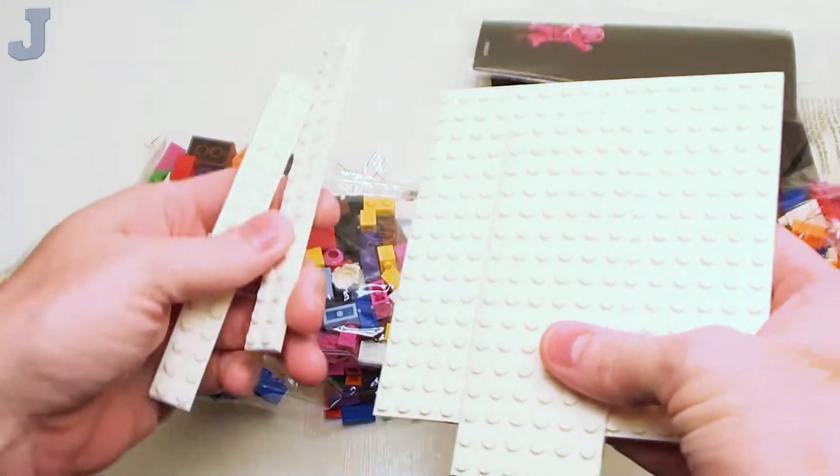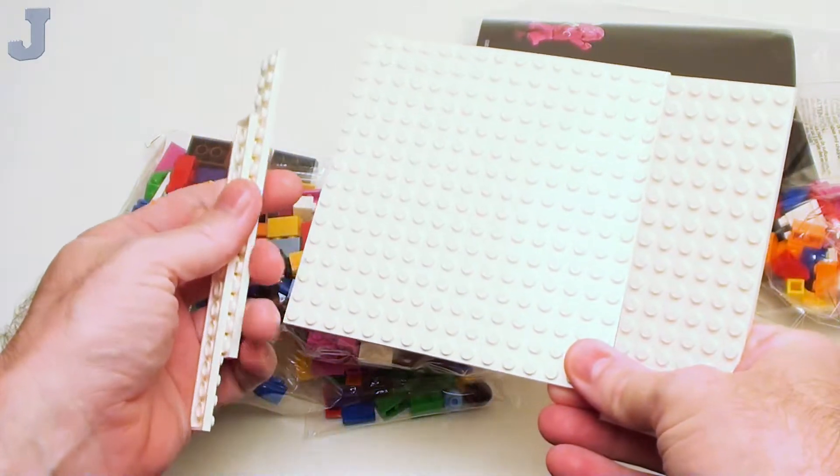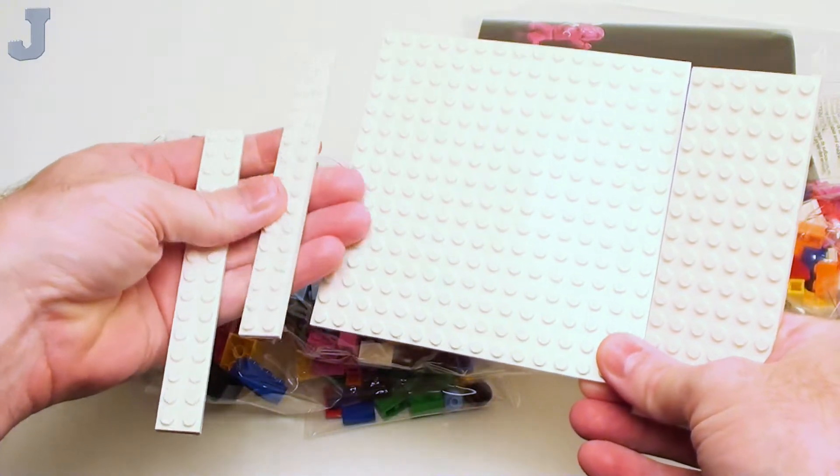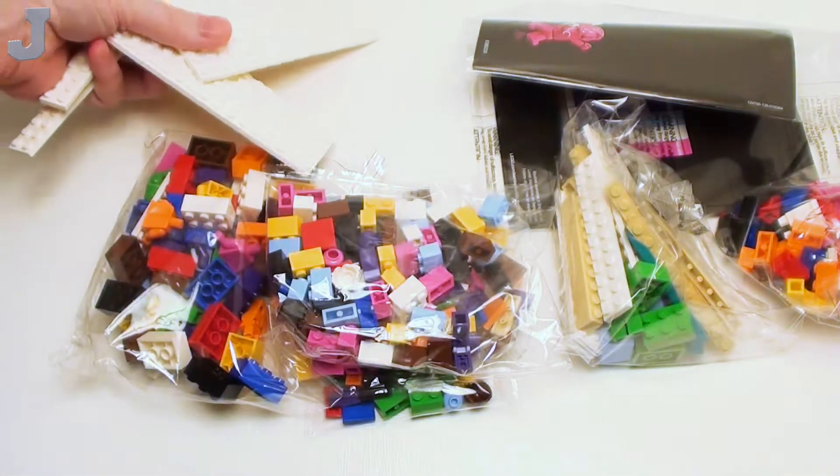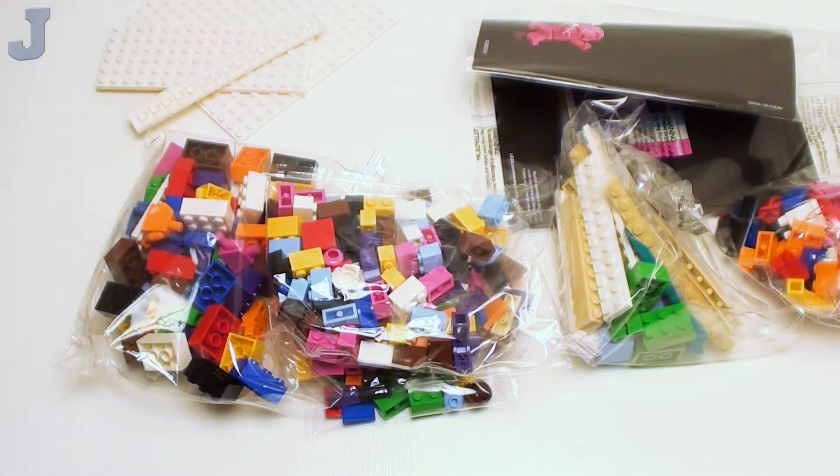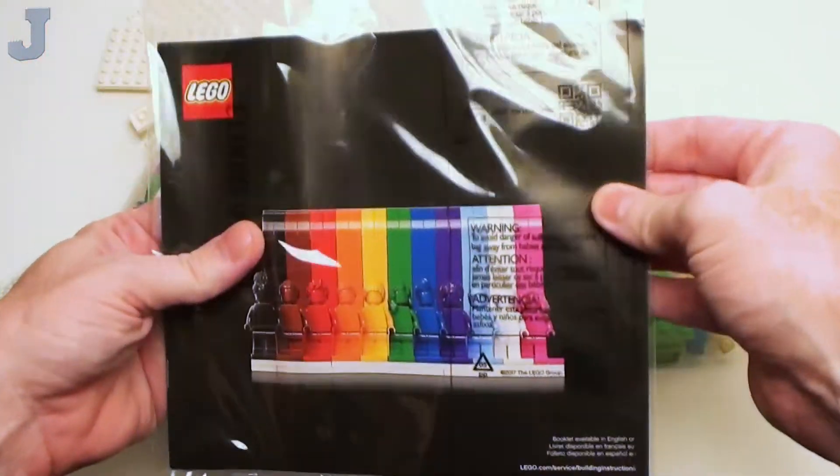So apparently we get several plates. We get a 6 by 16 and a 16 by 16 plate as well as some 2 by 16s. I can always use white because it makes great snowy terrain. And we got ourselves an instruction booklet.